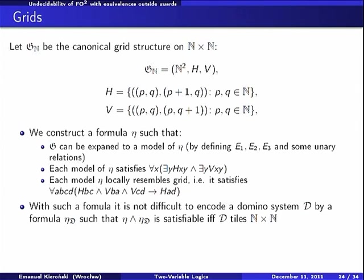Expanded because the standard grid has two predicates, H which is horizontal relation for horizontal neighborhood, and V for vertical. So we expand this language by some unary predicates, unary predicates and three equivalence relations. We want the standard grid to be able to expand to a model of eta.